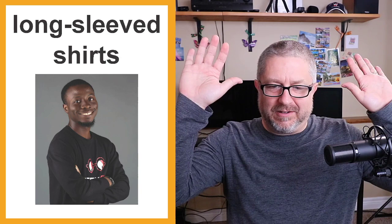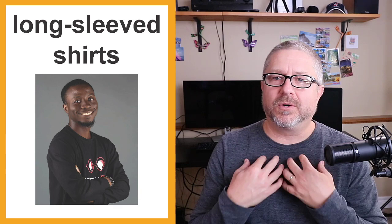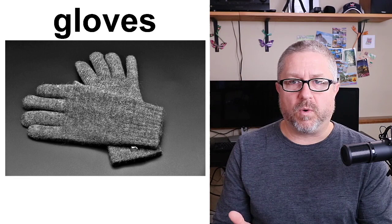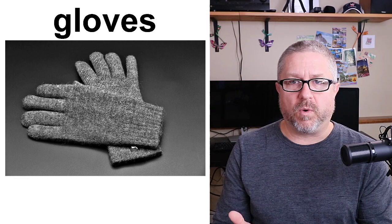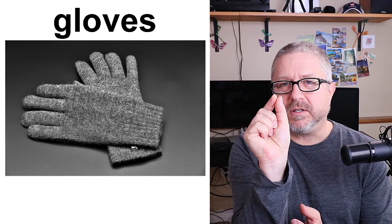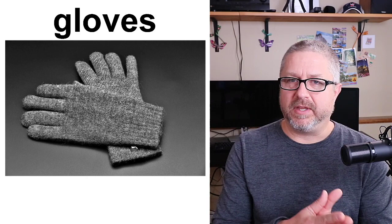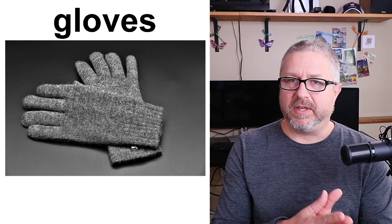You will start to see people wearing long sleeve shirts because it's starting to become a bit chilly outside. They wear a long sleeve shirt to stay a little warmer. You will also start to see people wearing gloves. I have a couple of different pairs of gloves — I have very thin gloves that I start wearing in the fall, especially if I go for a walk. As we get to the end of fall, I put on thicker gloves because it's starting to get a lot colder. Generally, Canadians have a variety of types of gloves: thin gloves for early in the fall and thicker gloves for later in the fall.